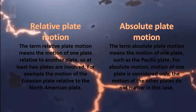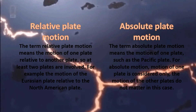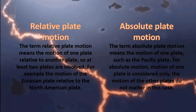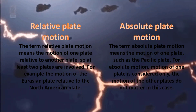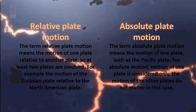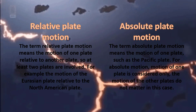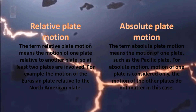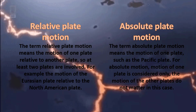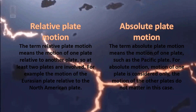Relative plate motion means the motion of one plate relative to another plate, so at least two plates are involved — for example, the motion of the Eurasian plate relative to the North American plate. Absolute plate motion means the motion of one plate, such as the Pacific plate. For absolute motion, only the motion of one plate is considered; the motion of other plates does not matter.